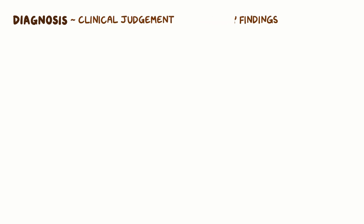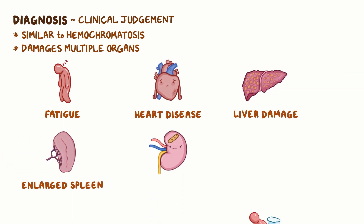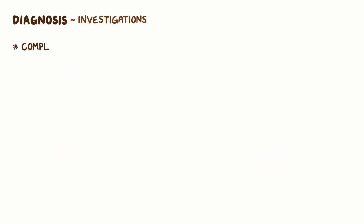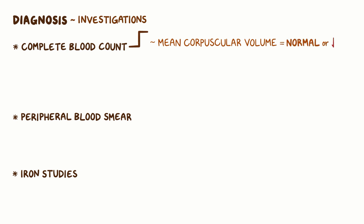A diagnosis of sideroblastic anemia can be reached with a combination of both clinical judgment and laboratory findings. Clinically, patients with sideroblastic anemia present very similarly to patients with hemochromatosis, as both diseases involve a buildup of excess iron within the body. The excess iron damages multiple organs, which can cause fatigue, heart disease, liver damage, enlarged spleen, kidney failure, and diarrhea. Investigations should include a complete blood count, peripheral blood smear, and iron studies. On the full blood count, the mean corpuscular volume is usually normal or low for the congenital causes.